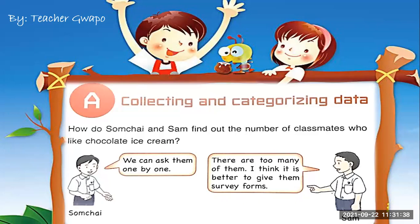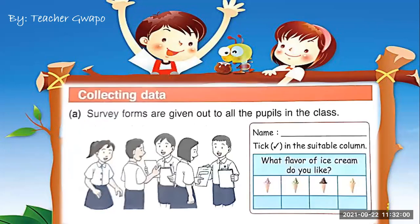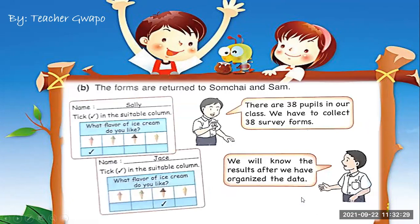Some Chai says we can ask classmates one by one to find out who likes chocolate ice cream. Sam says there are too many of them, so it's better to give survey forms. They gave survey forms to all the pupils in the class. Students write their names and tick the suitable column — chocolate ice cream, strawberry ice cream, or green tea ice cream.